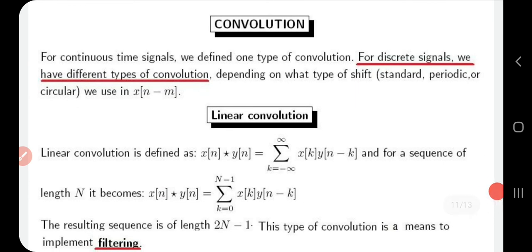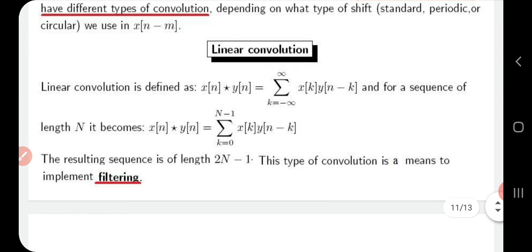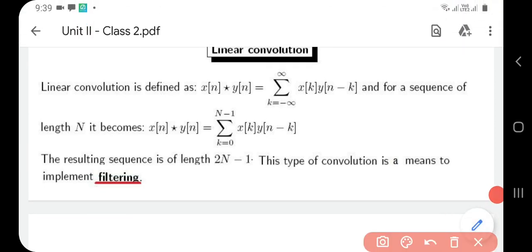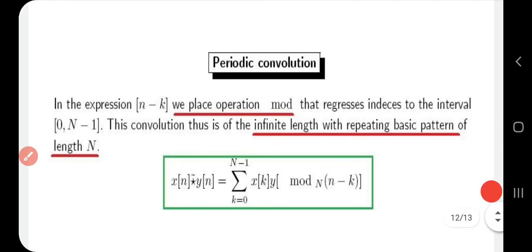Next we will learn about convolutions. There are mainly three types: linear, circular, and periodic. Linear convolution is defined as x(n) * y(n) = Σ_{k=-∞}^{+∞} x(k) * y(n-k). For a sequence of length N, the limit changes to k going from 0 to N-1; the rest is the same. The resulting sequence has length 2N-1. Linear convolution is a means to implement filtering.